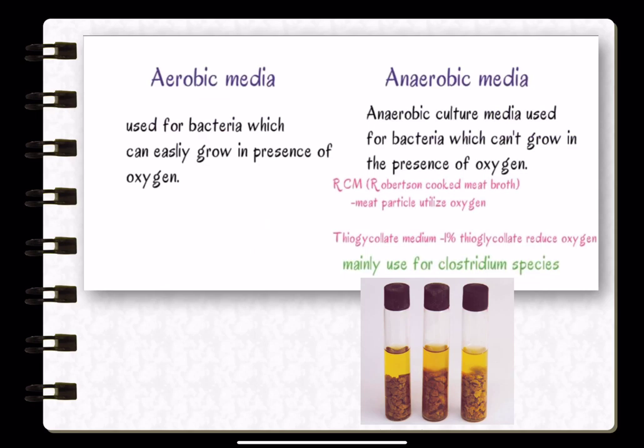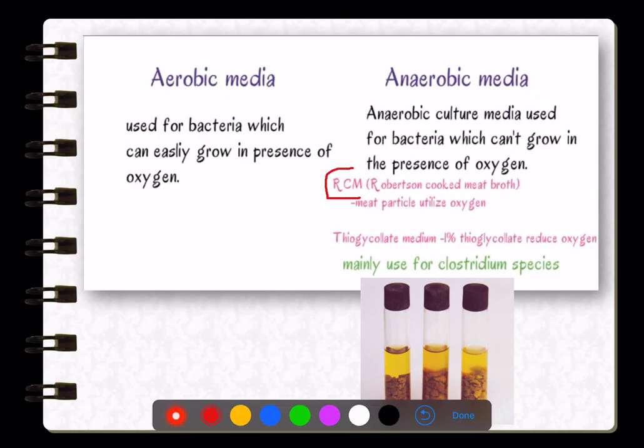There are also aerobic and anaerobic media. Aerobic media supports bacteria that grow in the presence of oxygen, whereas anaerobic media is for bacteria that cannot grow in the presence of oxygen. Commonly asked examples of anaerobic media are Robertson's cooked meat broth and thioglycollate medium.